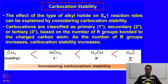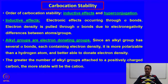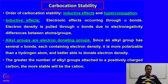We need to know why this trend is followed. The order of carbocation stability can be determined by two different effects: the inductive effect and hyperconjugation.